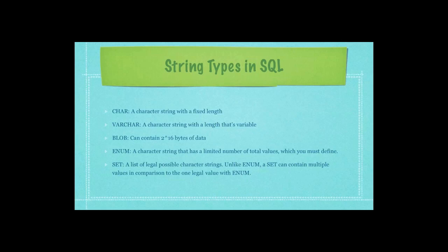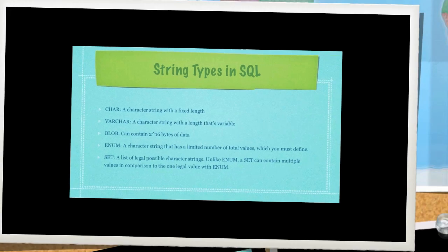String types in SQL? Well, you have the character, character string with a fixed length. That is what a character variable type is. Then you have the VAR character type. What this is saying is you don't really necessarily know how many characters you're going to put into this field. And you have blob, which contains an immense amount of text. ENUM, which is used to store a predefined set of values like we did before with male and female. And then you have set. And it's a list of legal possible character strings. Unlike the ENUM variable type though, a set can contain multiple values in comparison to the one legal value that is found with the variable type ENUM. And that is how they are different.